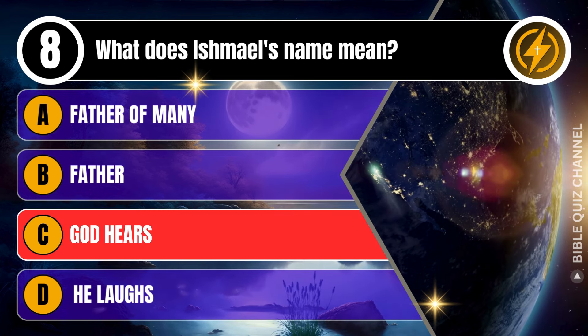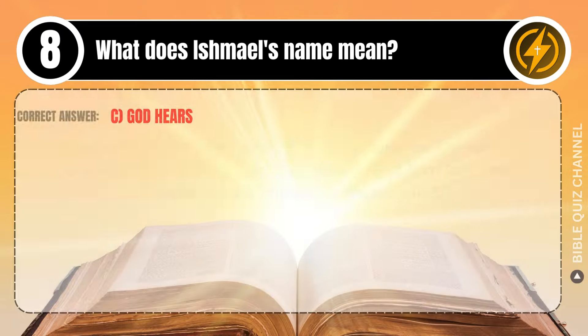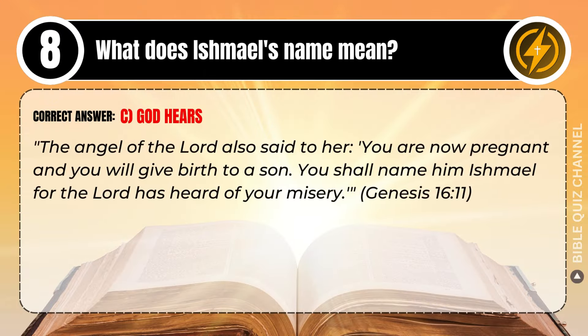Correct answer: C. God hears. Explaining the Bible — The angel of the Lord also said to her, 'You are now pregnant and you will give birth to a son. You shall name him Ishmael, for the Lord has heard of your misery.' Genesis, chapter 16, verse 11.